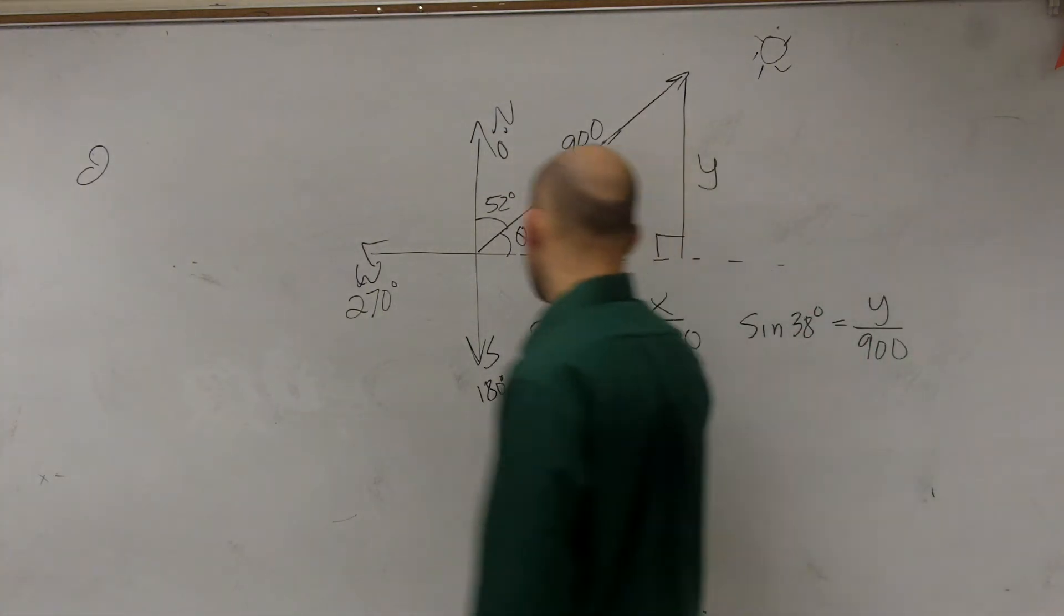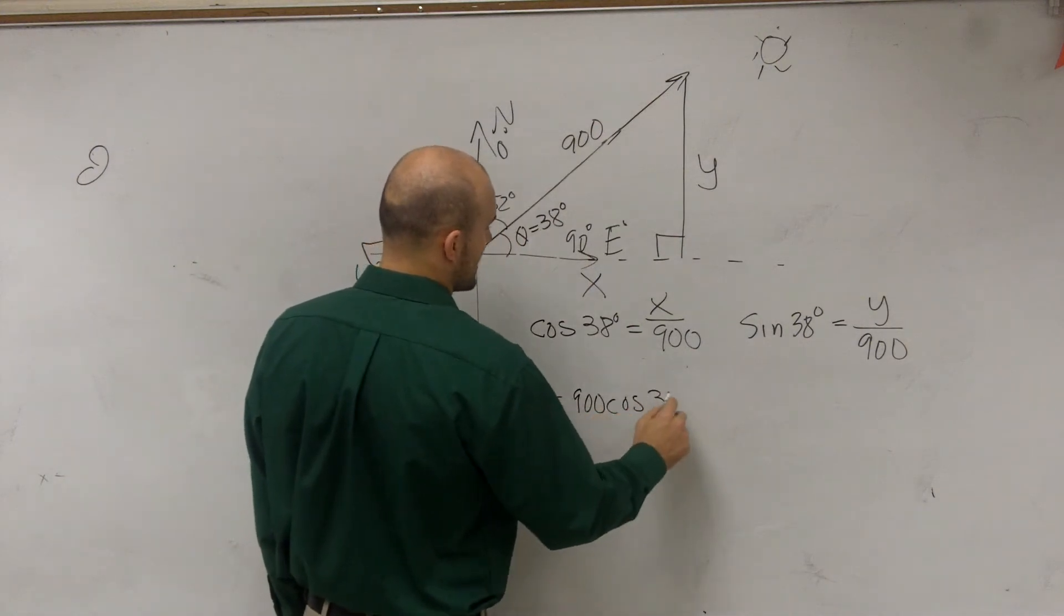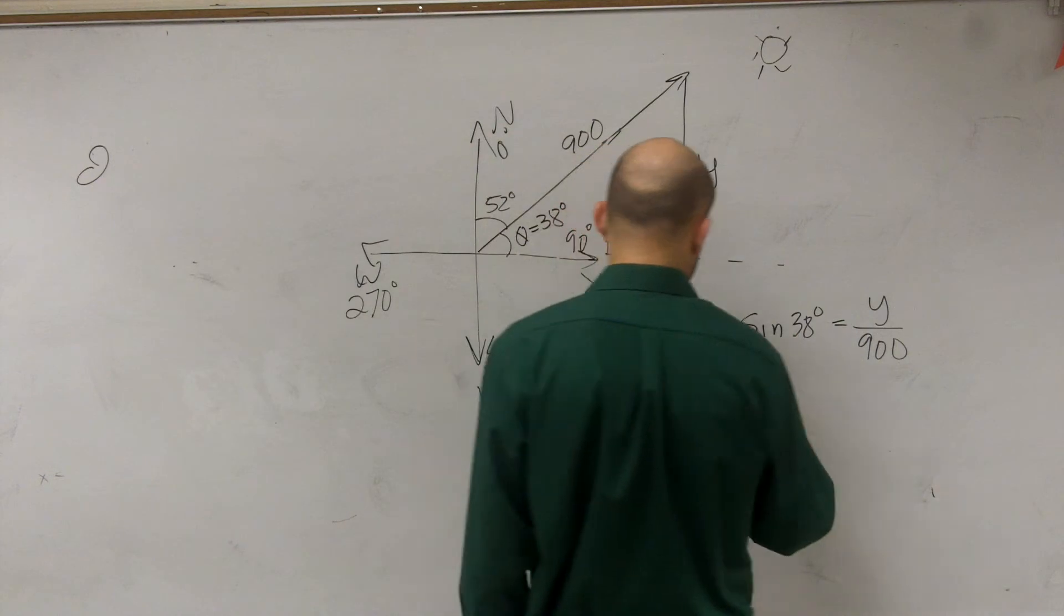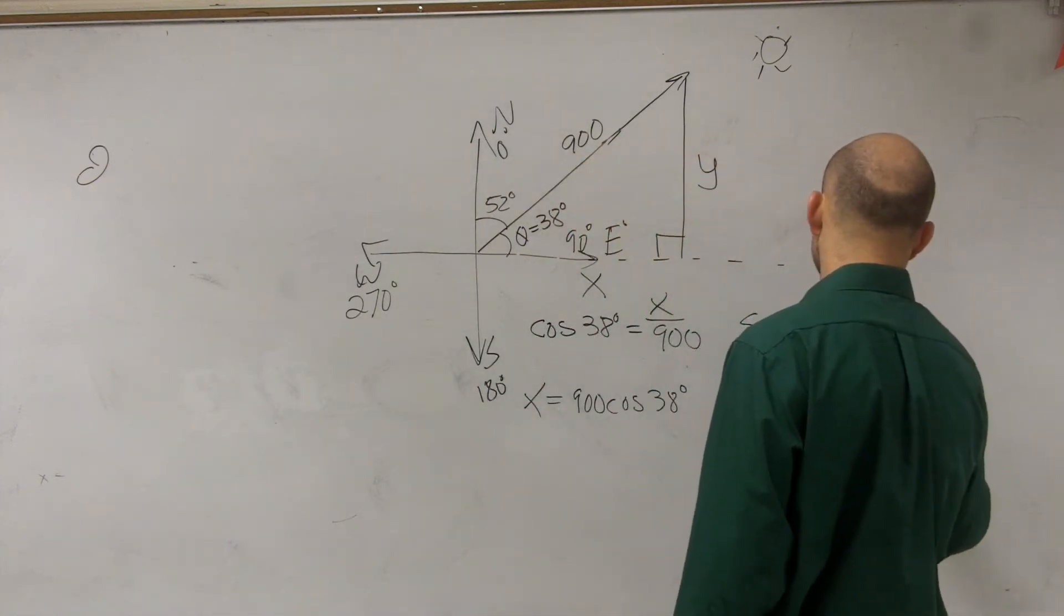Therefore, we can now rewrite this and say x equals 900 times cosine of 38 degrees. And here you could say y equals 900 times sine of 38 degrees.